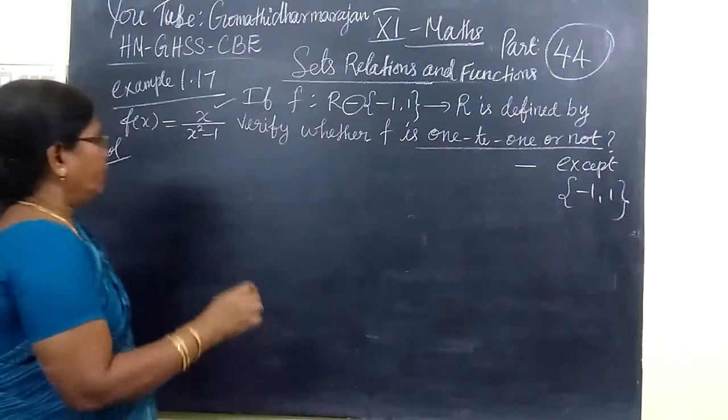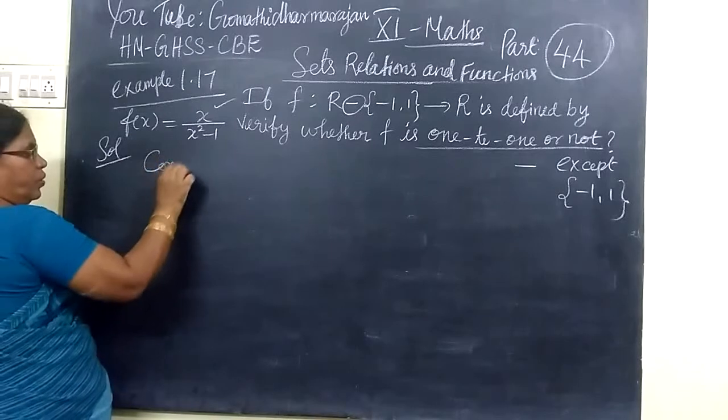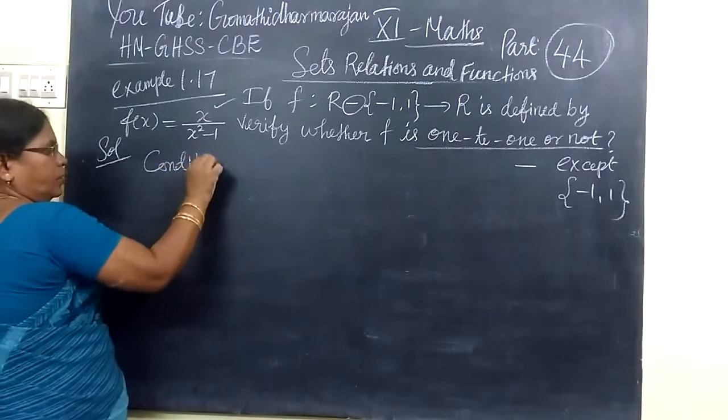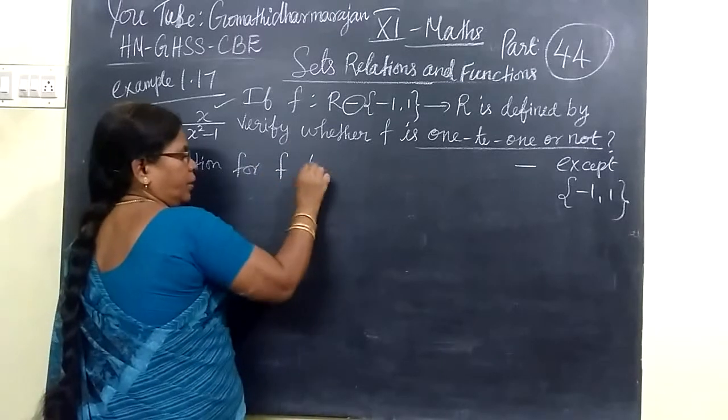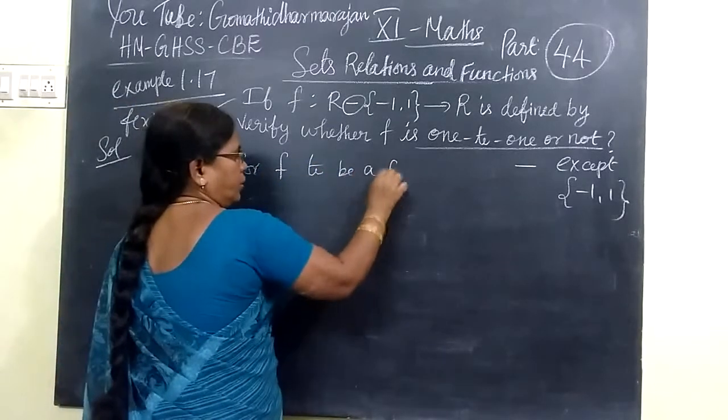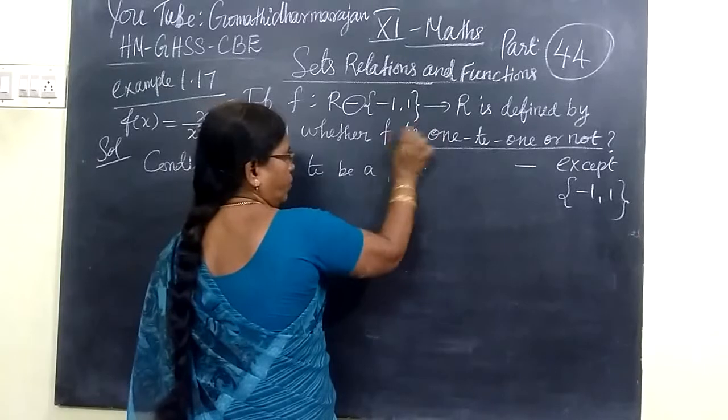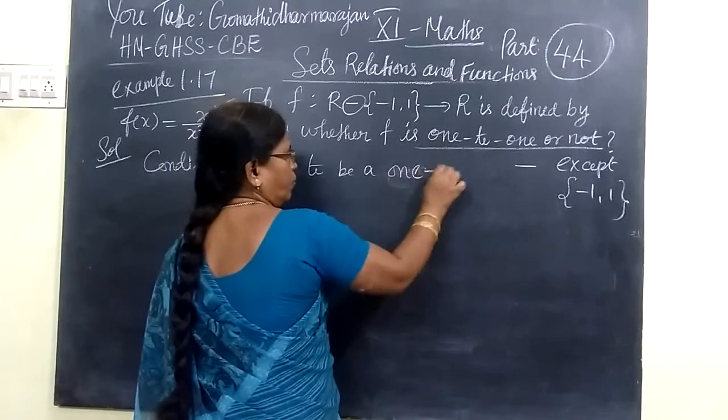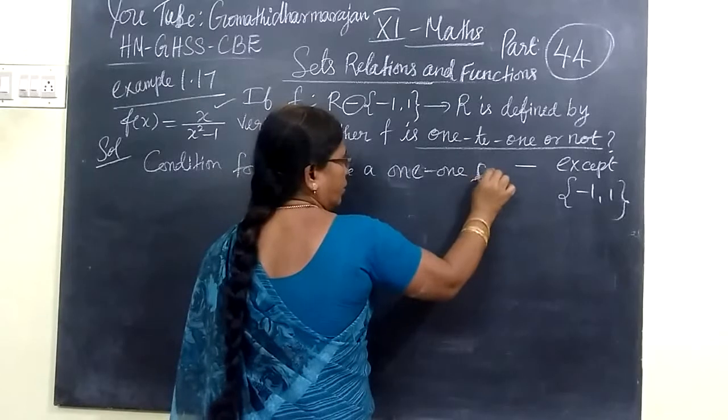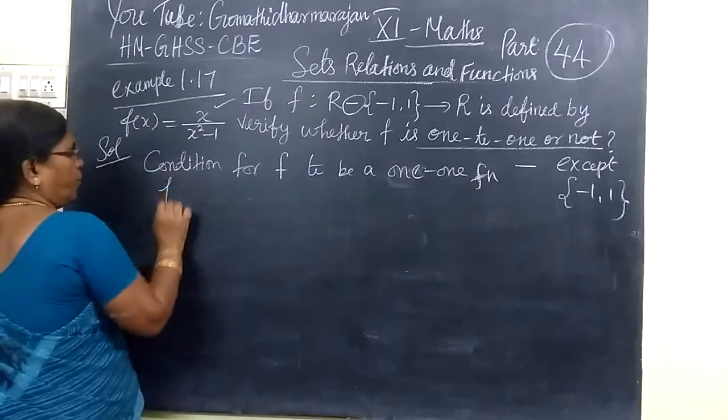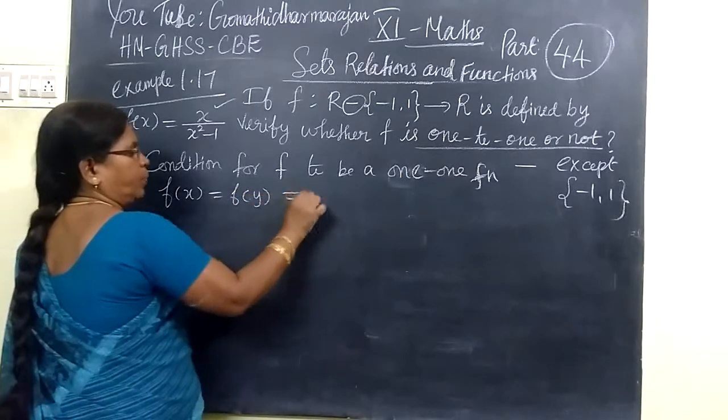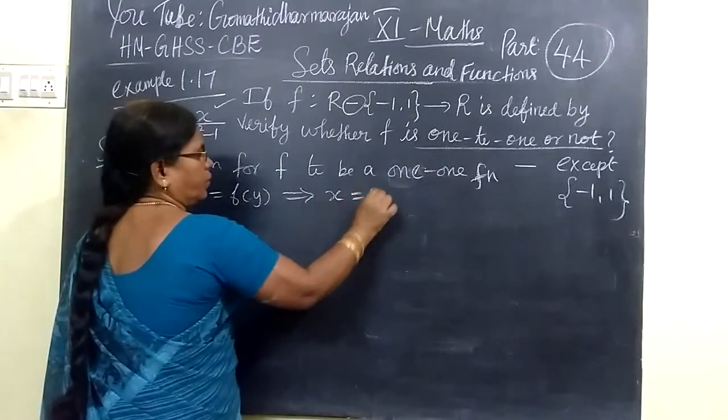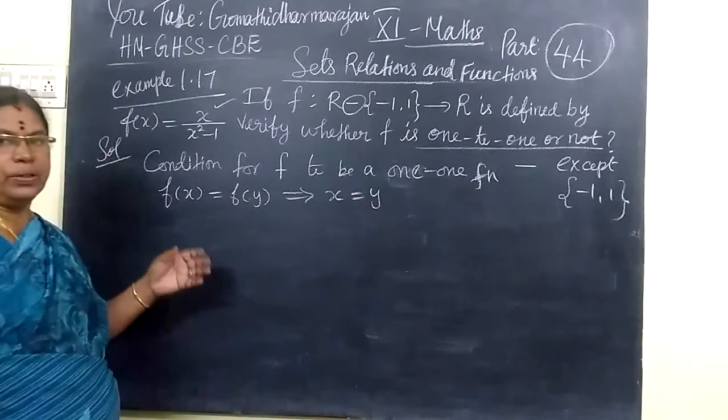So, what is the condition for 1-to-1? The condition for f to be a 1-1 function: f(x) equals f(y) implies x equals y. This is the condition.